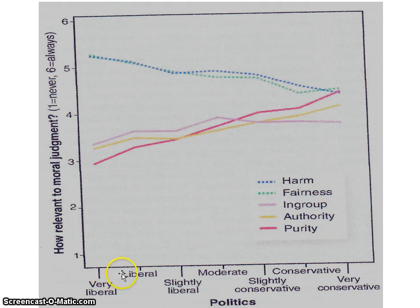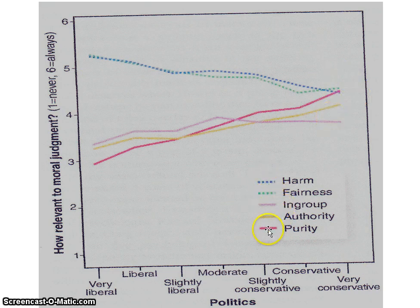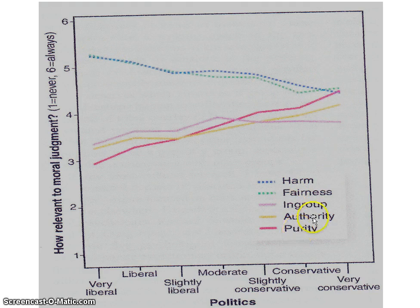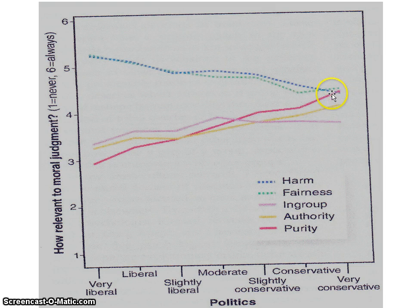For people who are more conservative, there is an increase across the three foundations of in-group, authority, and purity. For the very conservative individual, all five categories of items are judged as moral issues. Conservatives don't find harm and fairness items quite as moral as liberals do, but they find the other three — in-group, authority, purity — more moral than liberals. From this research, Haidt argued, using an analogy with a stereo equalizer, that conservatives have a five-channel morality where all five domains are moral concerns, whereas liberals have a two-channel morality favoring harm and fairness above the other three.